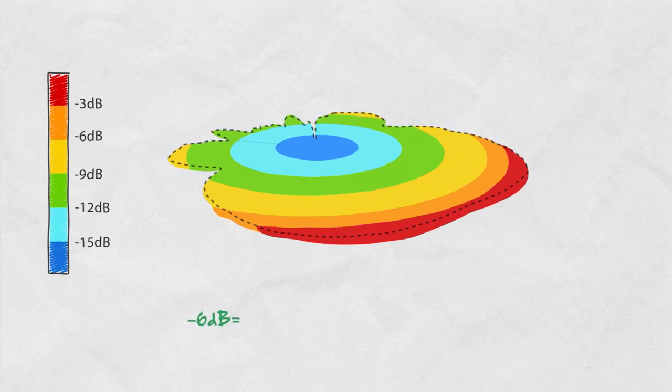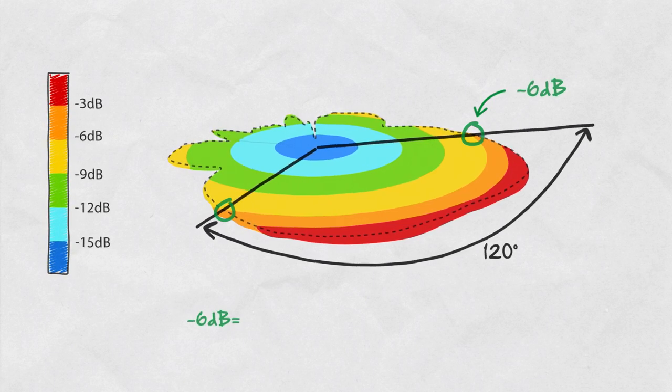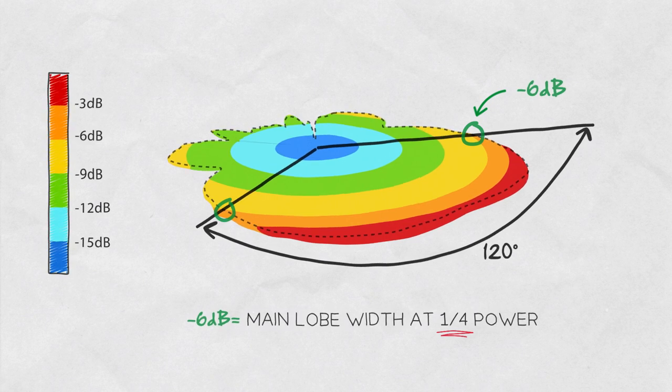Sometimes you can see negative 6dB beam widths in datasheets. This is the angle between the points of the main lobe which are 6dB below the maximum gain value. The negative 6dB points corresponds to a quarter of the maximum radiated power.